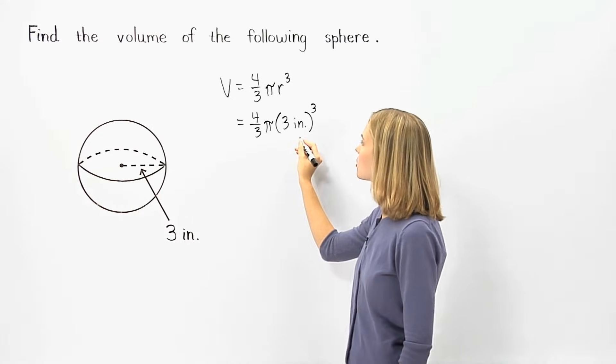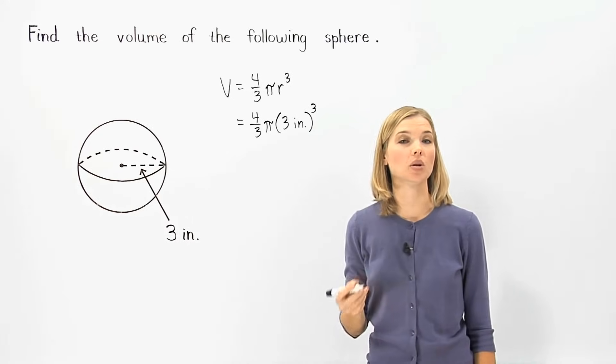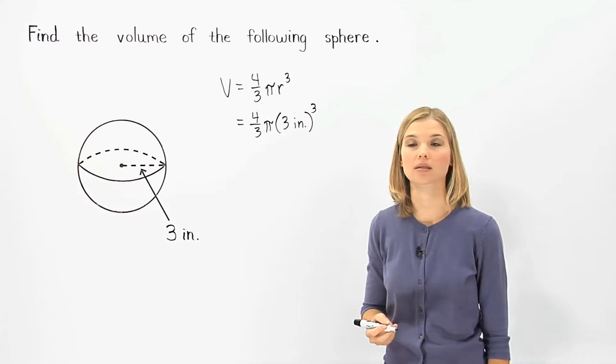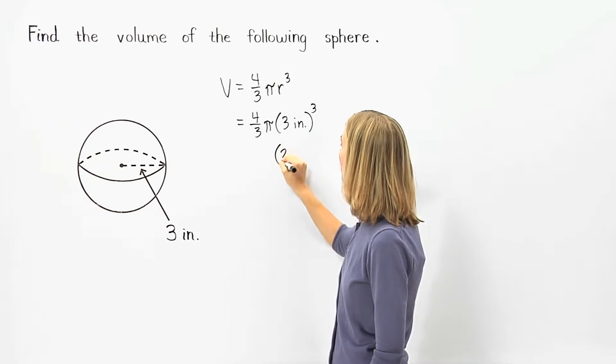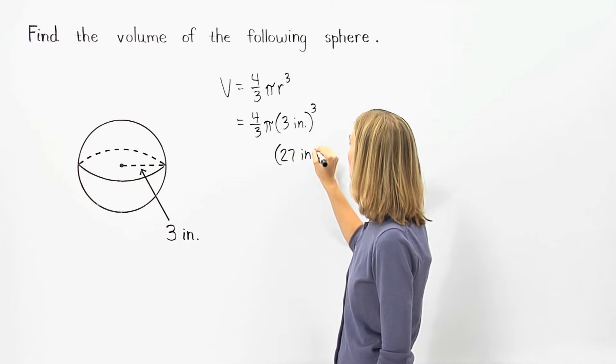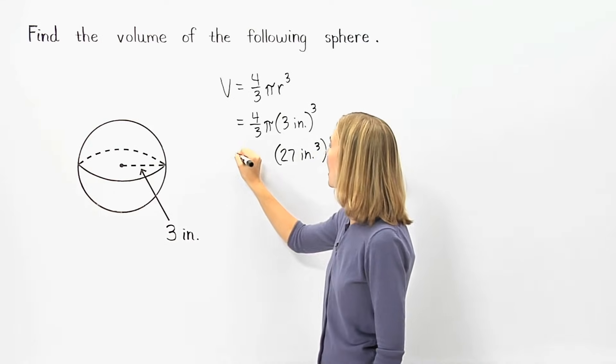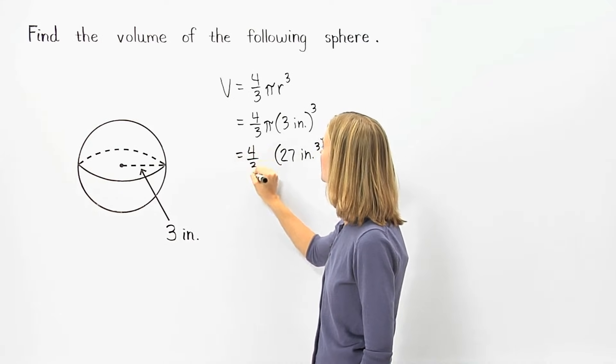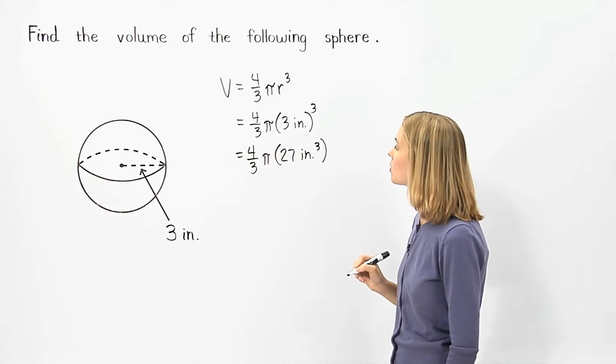Remember that three inches cubed is the same thing as three inches times three inches times three inches, which equals twenty-seven inches cubed. And we have four-thirds pi times twenty-seven inches cubed.